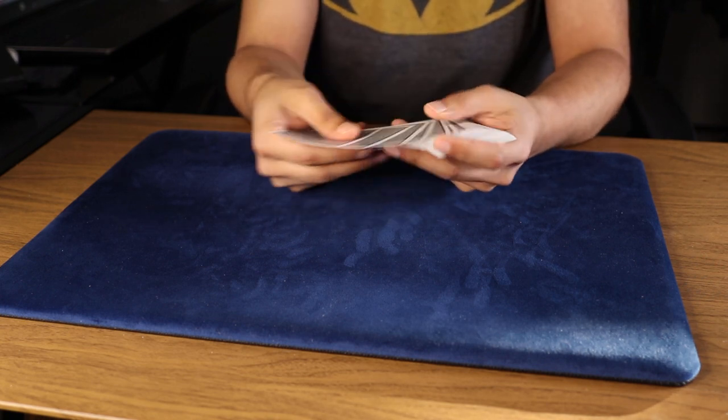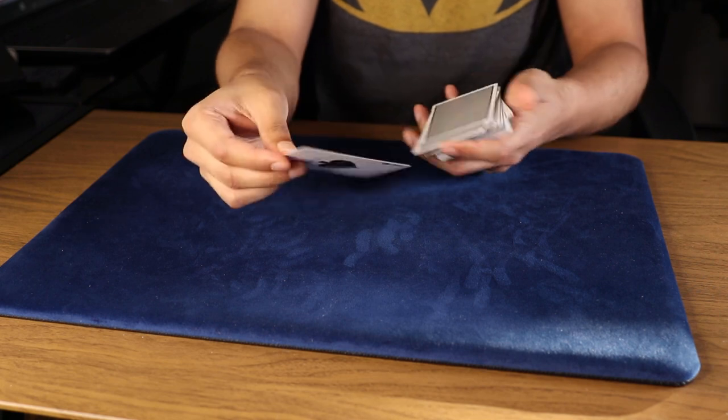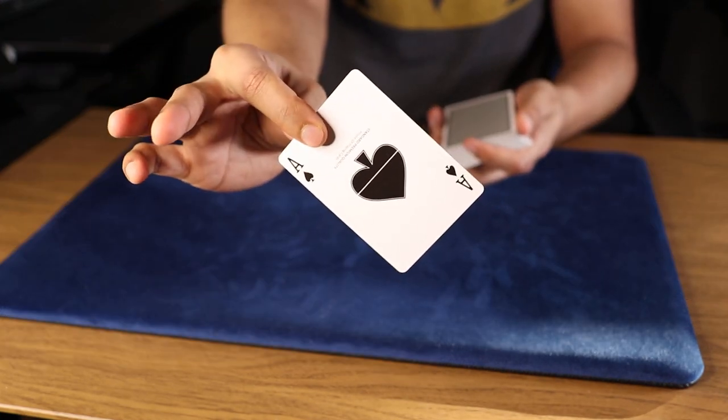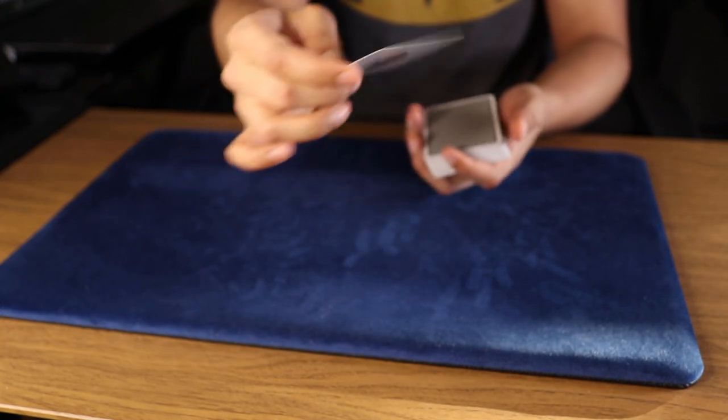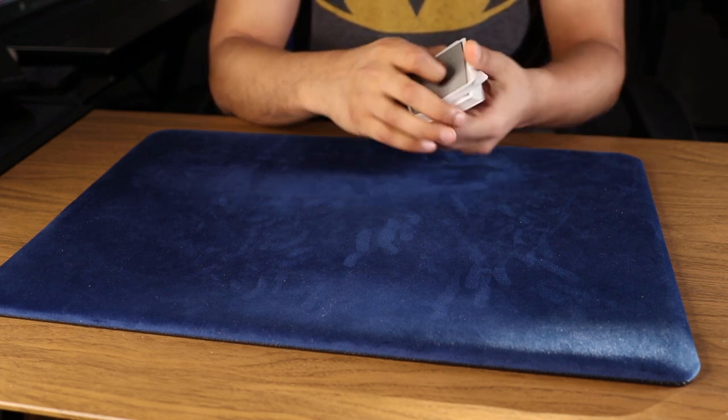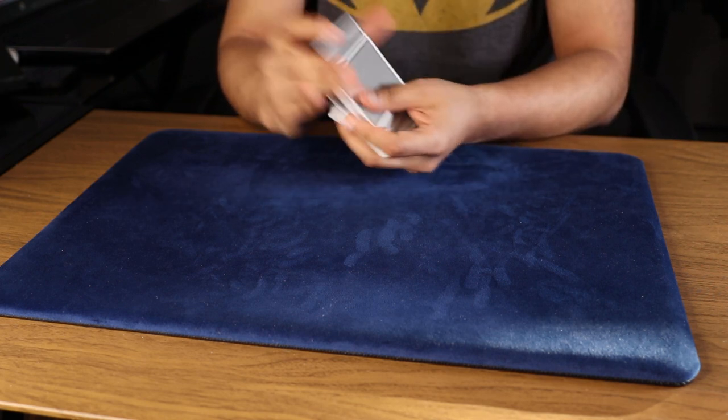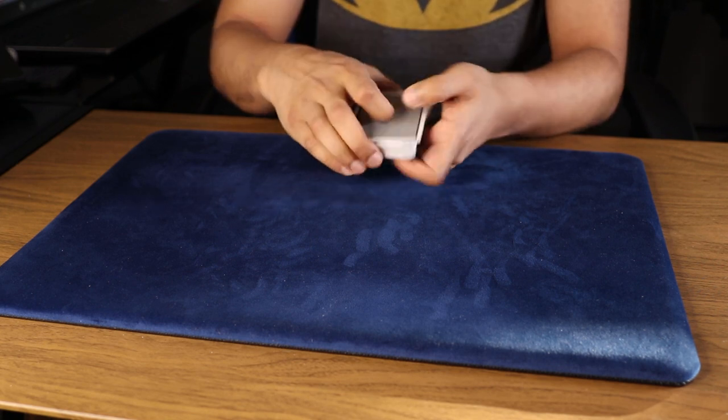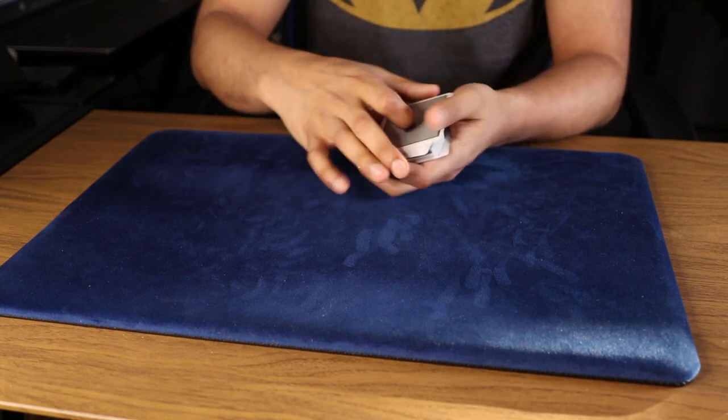Once this is done, we have the spectator go ahead and select out a card. Let's just say this one right here. Take a look and remember that card. Hopefully you got that memorized. We'll take it and I will lose it somewhere in the center of the deck. And I'll just give the deck another quick shuffle. Okay. There we go.